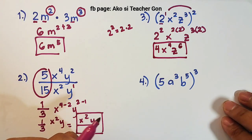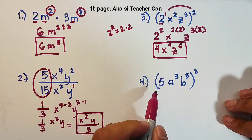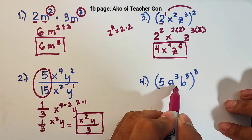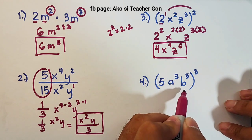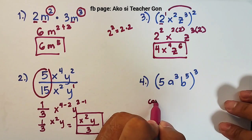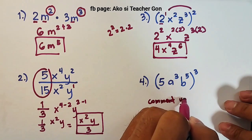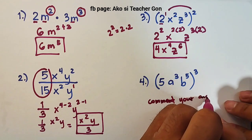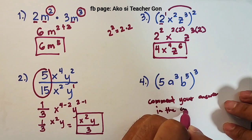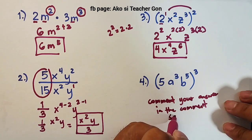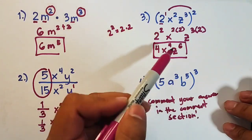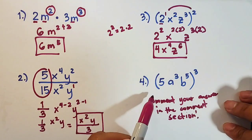Now for your activity: you are given 5a raised to 3, b raised to 5, all raised to the 3rd power. Comment your answer in the comment section. You will apply what we did in number 3 to solve this.